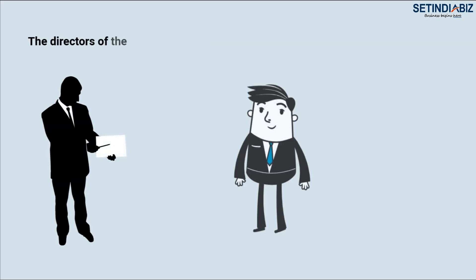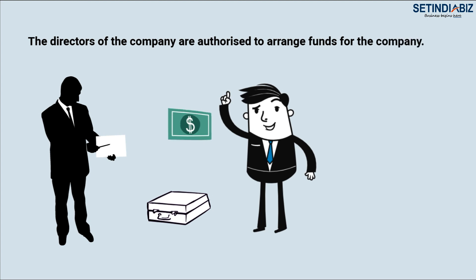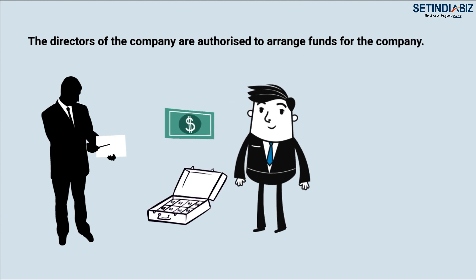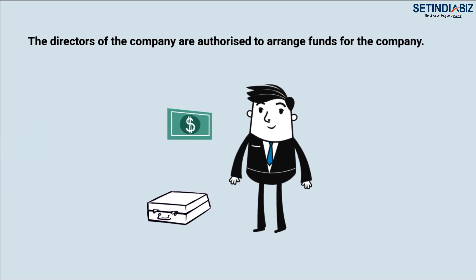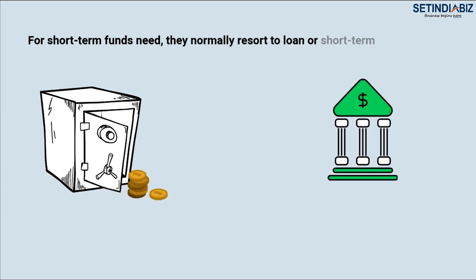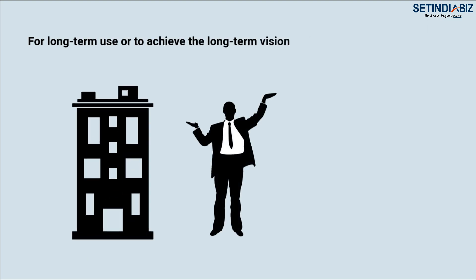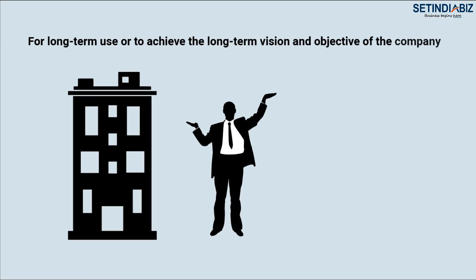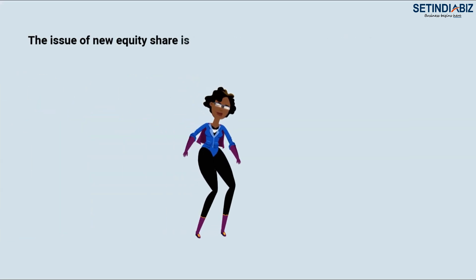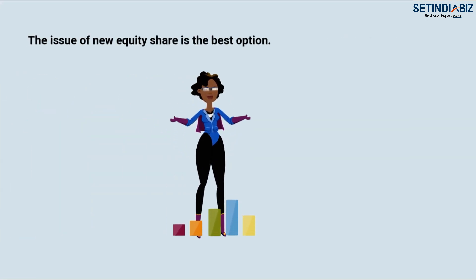The directors of the company are authorized to arrange funds for the company. For short-term funds needs, they normally resort to loans or short-term credit facilities. However, for long-term use or to achieve the long-term vision and objective of the company, the issue of new equity shares is the best option.